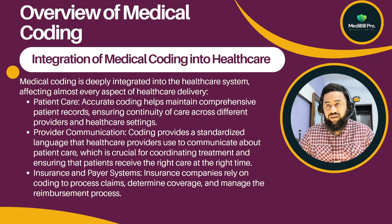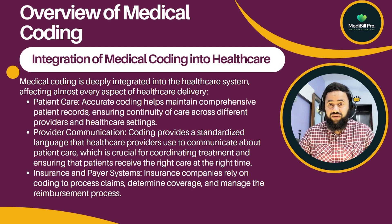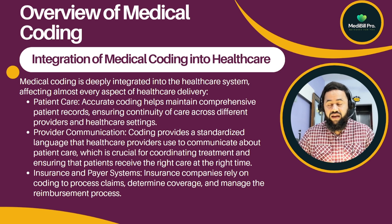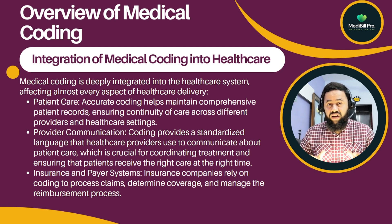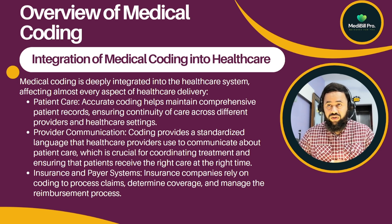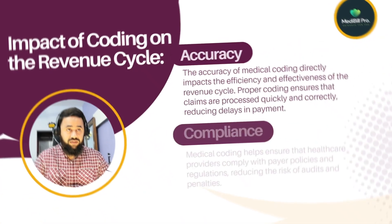Insurance companies rely on coding to process claims, determine coverage, and manage the reimbursement process. Once a claim is submitted, the insurer reviews patient information, provider information, and charges. If everything is correct, the claim is adjudicated and paid. If there is an error — such as mismatched procedure and diagnosis codes — the claim is denied, requiring a corrected claim or an appeal.